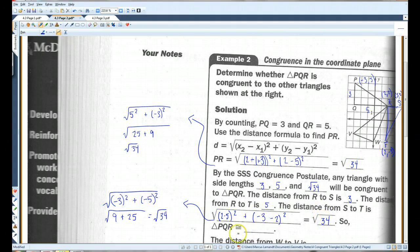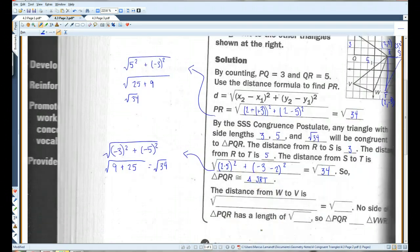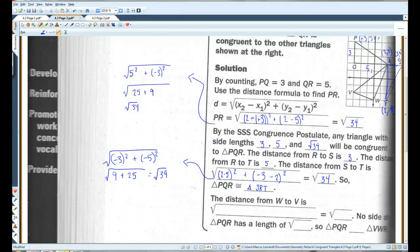This will give you 9 plus 25, which is root 34. So, triangle PQR is congruent to triangle SRT. Make sure you line up the letters correctly.